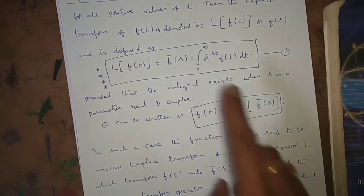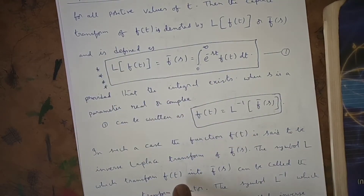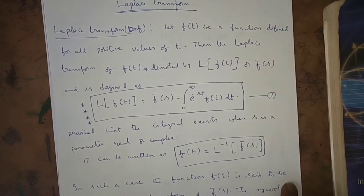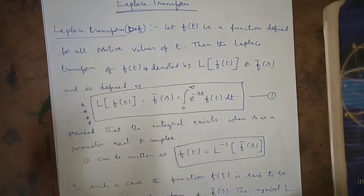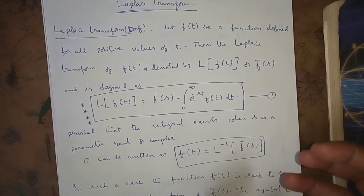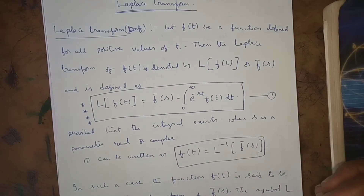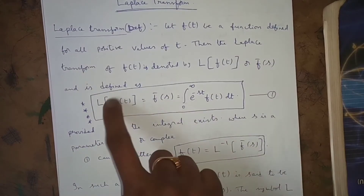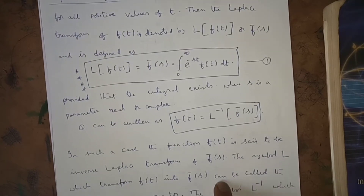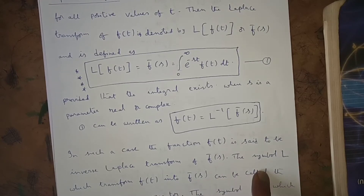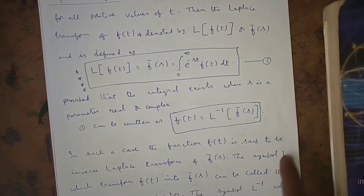The symbol capital L transforms f(t) into f̄(s) — that is why it is called the Laplace transform. Functions in terms of t are transformed into functions in terms of s. The symbol capital L which transforms f(t) into f̄(s) is called the Laplace transform operator.